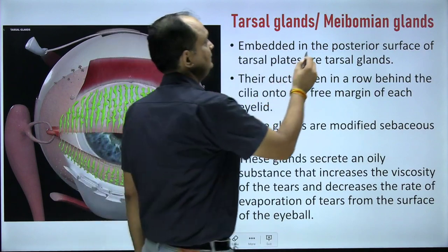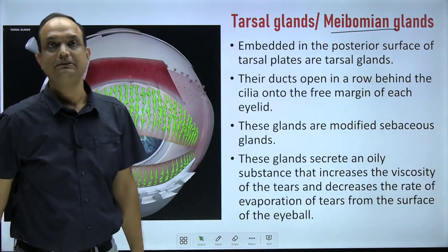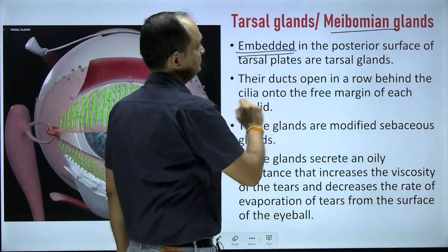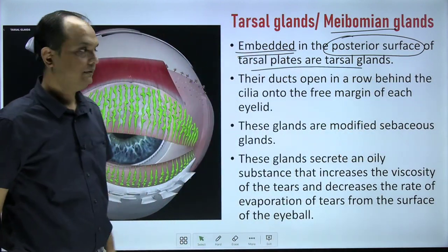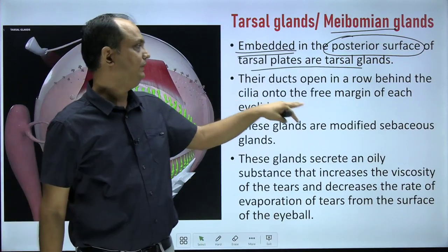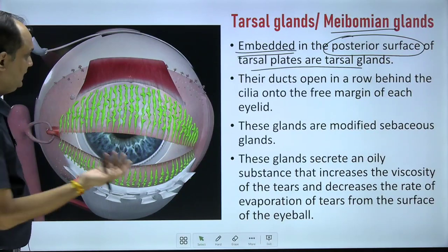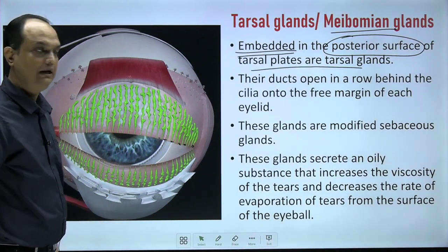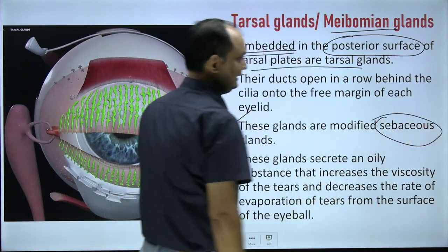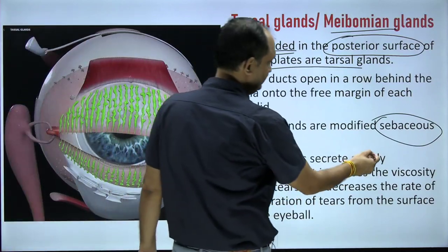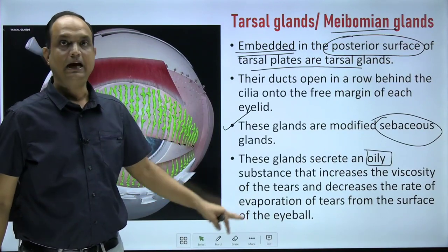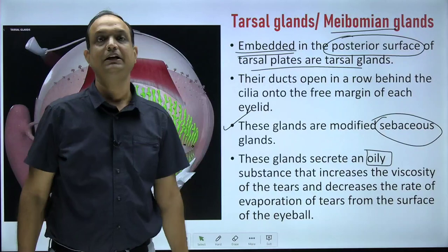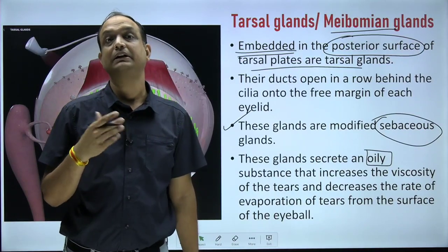The next layer is the tarsal glands, also known as Meibomian glands. They are embedded on the posterior surface of the tarsal plates. Their ducts open in a row behind the cilia on the free margins of each eyelid. When the tarsal plate is removed, you can see these glands in both eyelids and the openings of their ducts. The tarsal glands are modified sebaceous glands and their secretion is oily in nature.